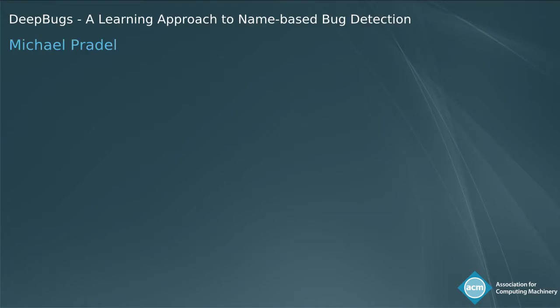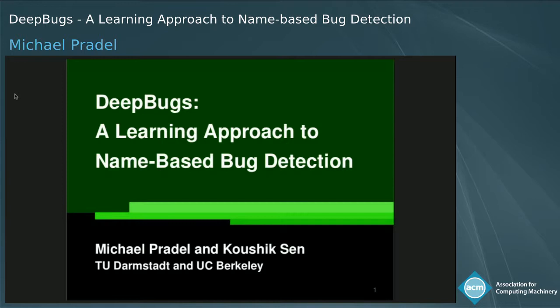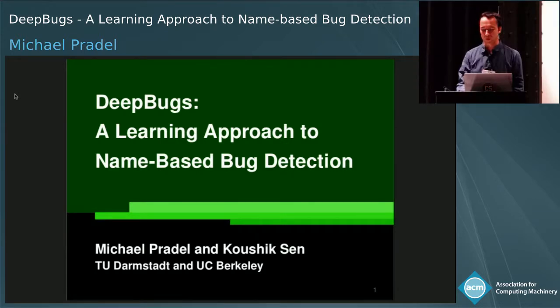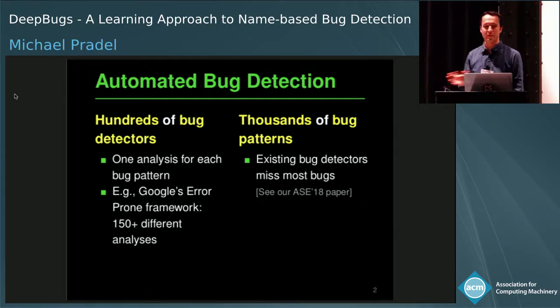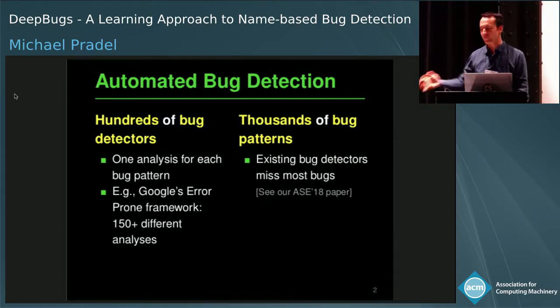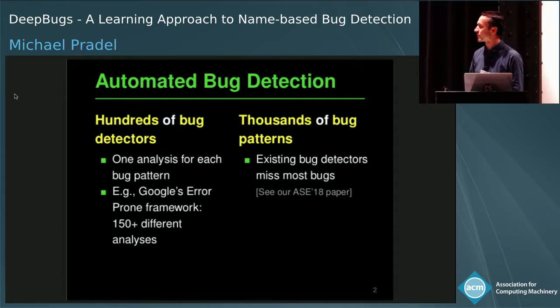Welcome to my talk. This talk is about bug detection and how to use machine learning in order to help with bug detection. I'd like to start with an observation about bug detection and the kinds of techniques that we've developed in the past decades in order to find bugs.